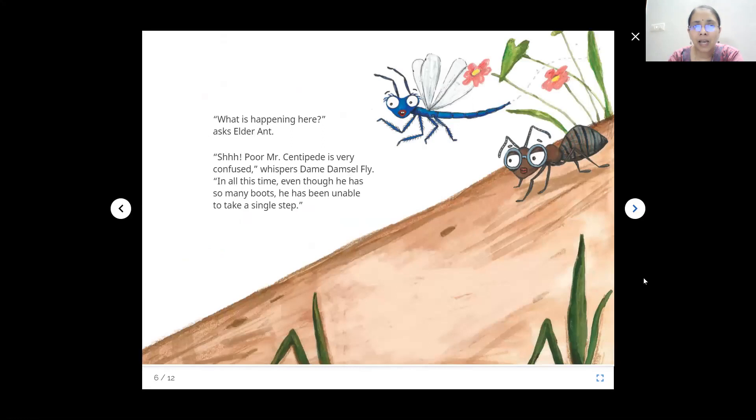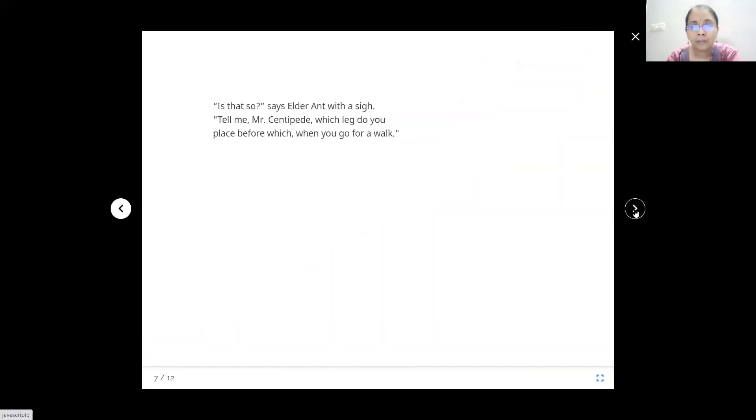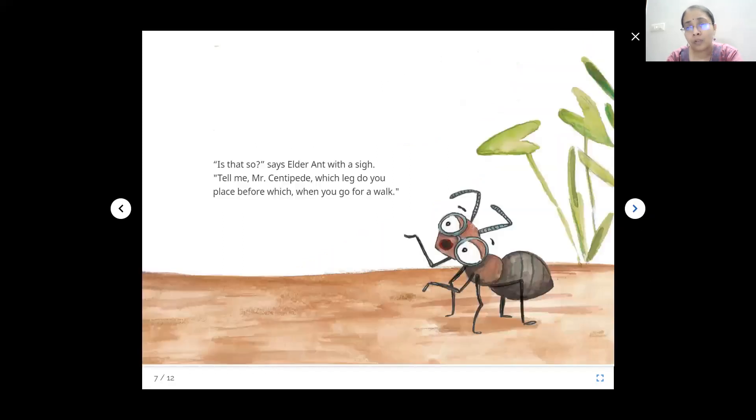What is happening here, asks Elder Ant, and poor Mr. Centipede is very confused. In all this time, even though he has so many boots, he has been unable to take a single step because everyone keeps asking him which foot to put forward and he keeps getting confused. He doesn't know which one.